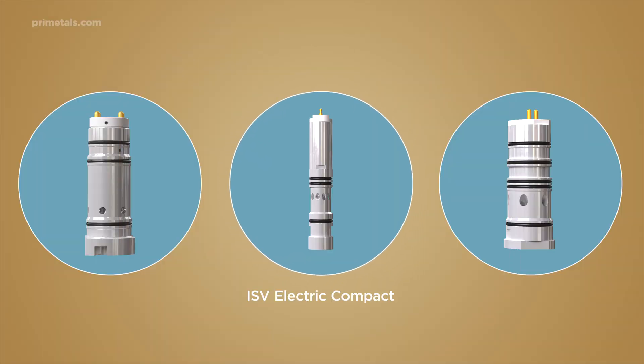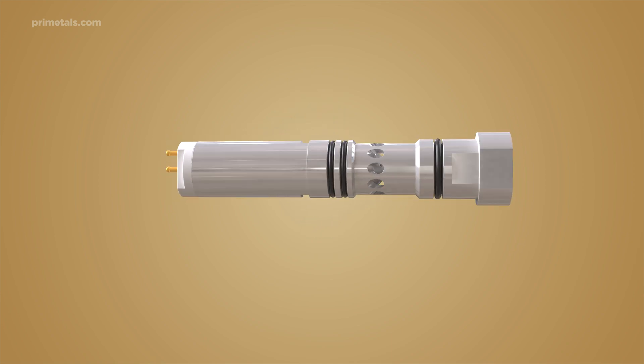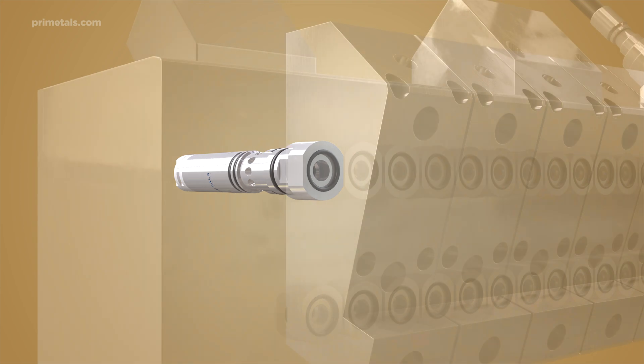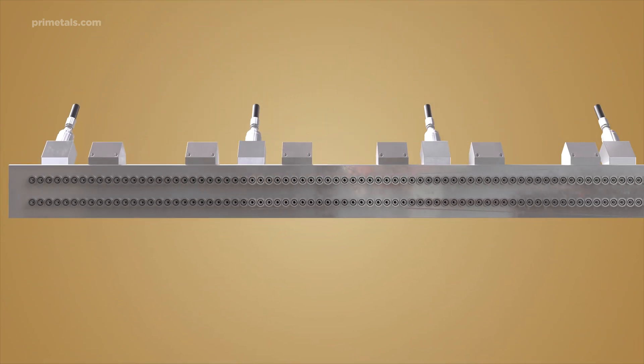The ISV electric compact is a fully electrically operated valve tailored for narrow 26 millimeter zone pitching and dual row applications. Individual control of each valve allows for up to 120 flow levels per zone.